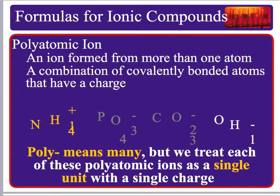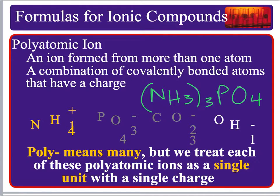We can have monatomic ions — just a single element — binary ionic compounds with two elements, and polyatomic ions, where poly means many. For example, ammonium phosphate has three ammonium ions and one phosphate ion. We treat each polyatomic ion as a single unit with a single charge. We'll see more of this in class.